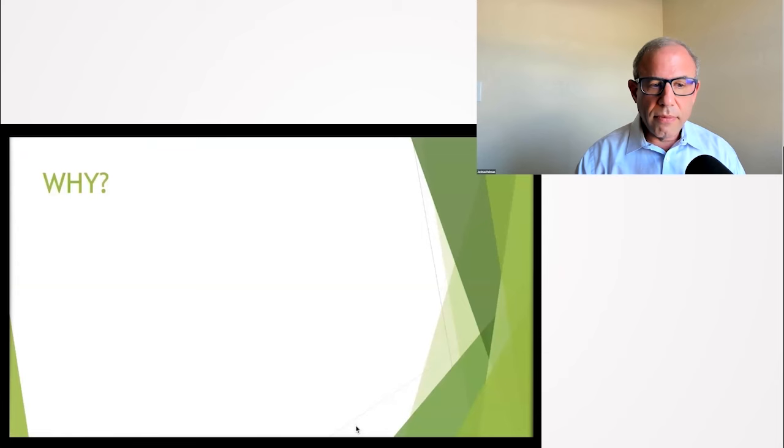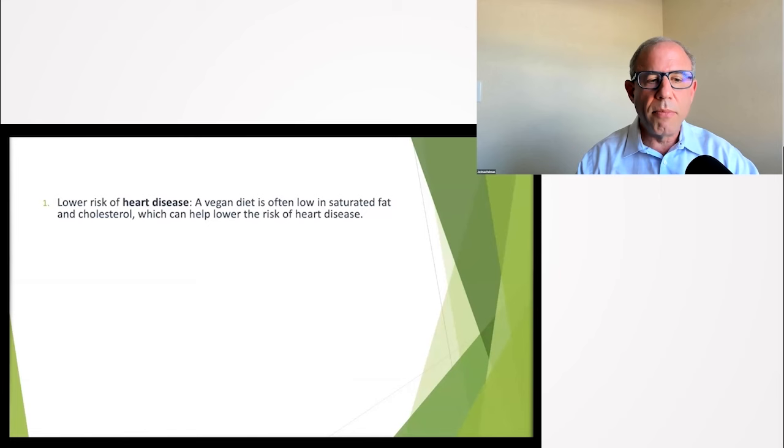Why would you live longer if you're just eating plants and avoiding animal products? Here are some theories. Number one: eating plants lowers your risk of heart disease, specifically a diet that's lower in saturated fat and cholesterol. There's no cholesterol in plants, folks, that can help lower the risk of heart disease. Number two: eating plants will lower certain types of cancers.